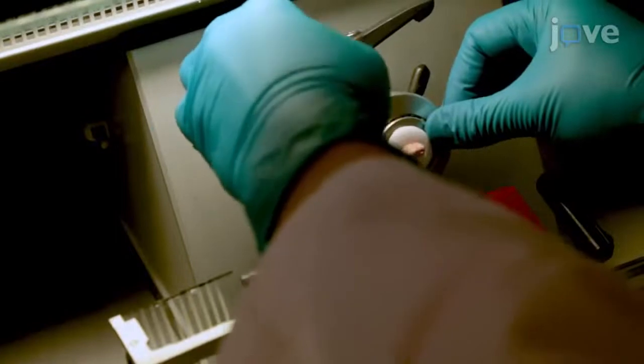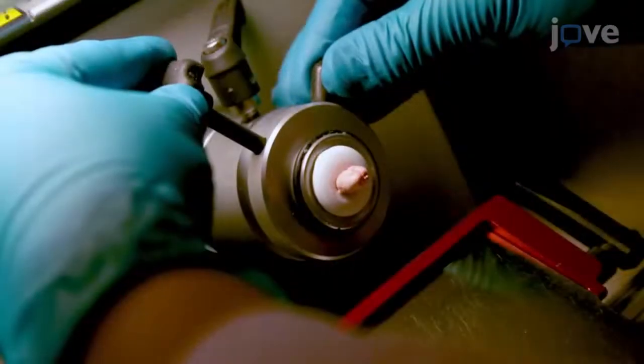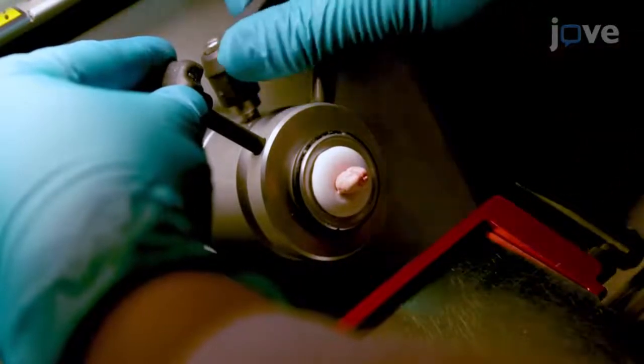Position the tissue holder in the microtome of the cryostat. Adjust the orientation of the tissue to avoid sloped sections.